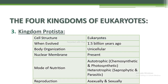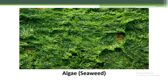Third is kingdom Protista. Cell structure: eukaryote that evolved 1.5 billion years ago. Body organization: unicellular, nuclear membrane present. Mode of nutrition: autotrophic — chemosynthetic or photosynthetic; heterotrophic — saprophytic and parasitic. Reproduction: asexual and sexual. All unicellular eukaryotes are placed under Protista — they are a diverse collection of organisms, though boundaries of this kingdom are not well defined. Protists are simple eukaryotic organisms that are neither animal, plant, nor fungi, and are often seen living as colonies of cells. Examples include algae and seaweed.